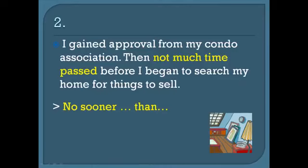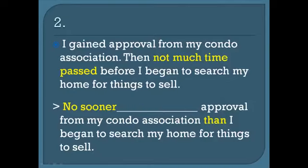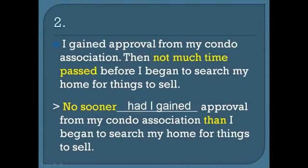Number two: 'I gained approval from my condo association. Then not much time passed before I began to search my home for things to sell.' Your answer might read: 'No sooner did I gain approval from my condo association than I began to search my home for things to sell.' However, there's often a preference for the past perfect when using 'no sooner than,' so the preferred wording would be: 'No sooner had I gained approval...' Use of the past perfect really clarifies the order of events.